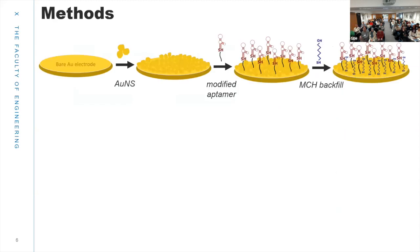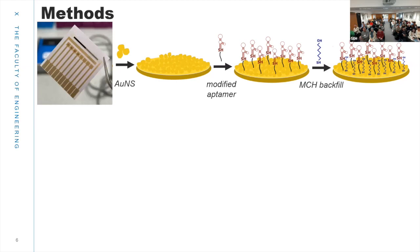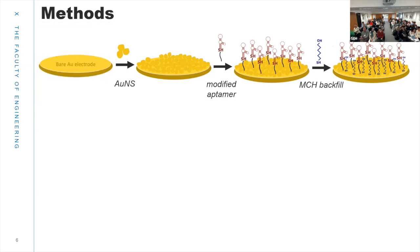Moving on to the methods: this is a schematic of what I've been using for both methods, though there are some differences. We start with the bare gold surface — this is the chip we are currently using, with eight working electrodes that share a common counter and reference electrode. We then do electrodeposition of gold nanostructures — they look more like flower-like structures under SEM — using chronoamperometry. We then incubate the electrodes with the modified aptamer, which is pre-reduced, for one hour, at a working concentration of one micromolar. We then perform a wash step and backfill the remaining active sites on the electrode with MCH.